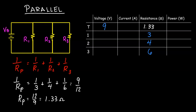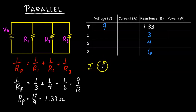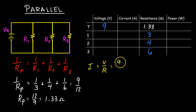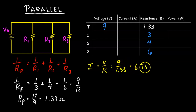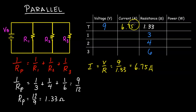The next step is to use Ohm's Law — current equals voltage divided by resistance. The voltage is 9 volts and the resistance is 1.33 ohms. So 9 divided by 1.33 gives us 6.75 amperes as the total current through the battery.